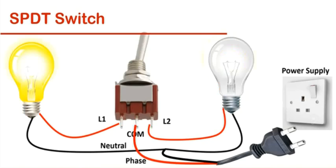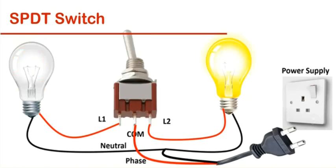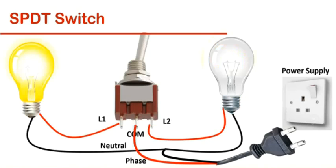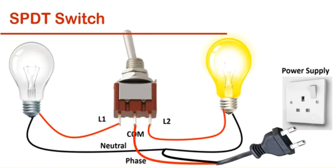For example, you can control two bulbs using a single switch. When the left bulb is on, the right bulb turns off and when the right bulb is on, the left bulb turns off.